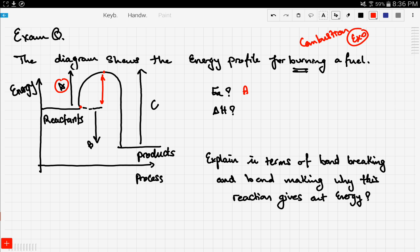What about delta H? Delta H is H of products minus H of reactants. So it's the distance between the products and the reactants. Which distance is this? It's B. So your delta H is B.